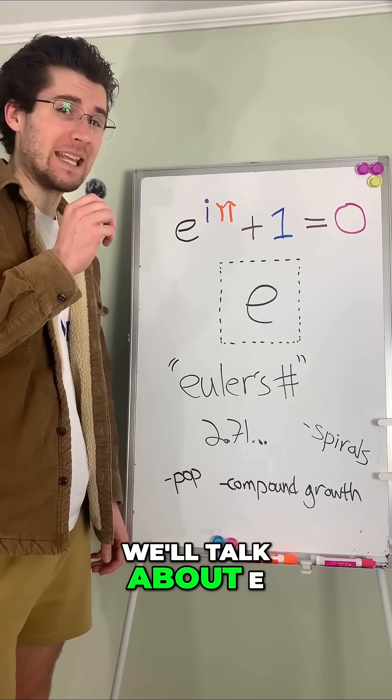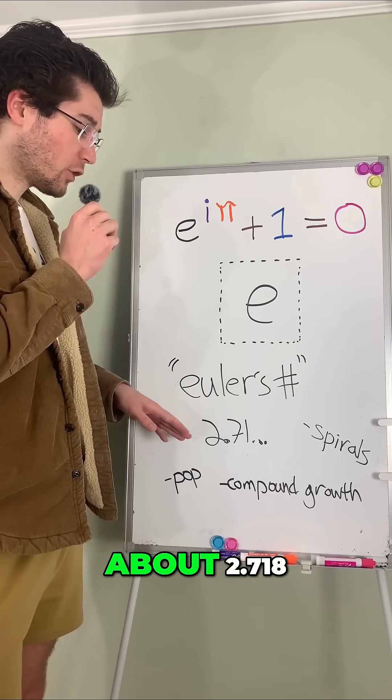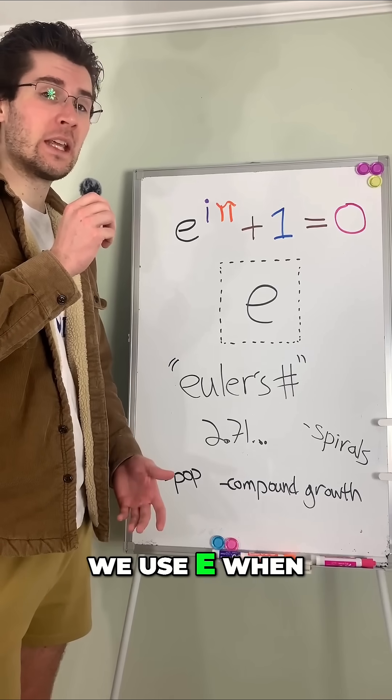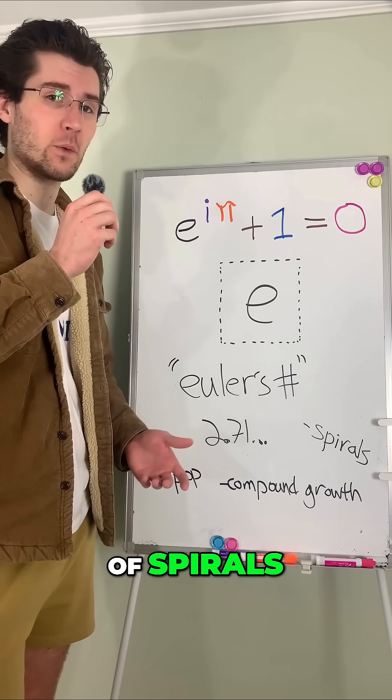First off, we'll talk about e, which is Euler's number. Euler's number is an irrational number, which equals about 2.718. We use e when we're looking at population growth, compound growth, or even the formation of spirals.